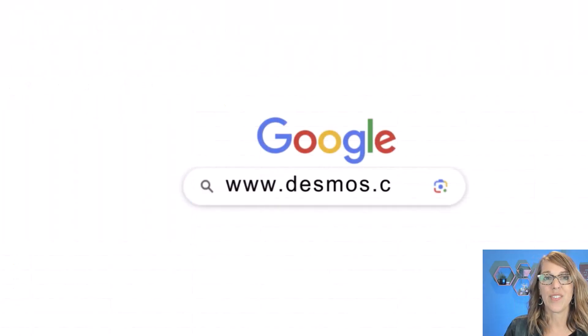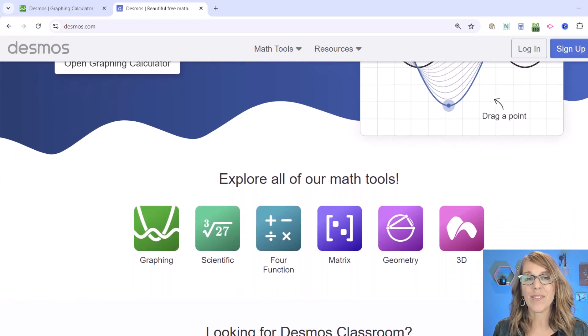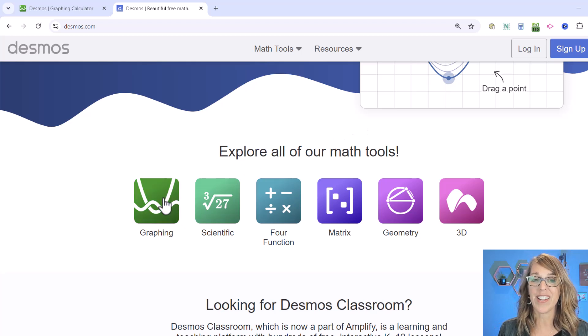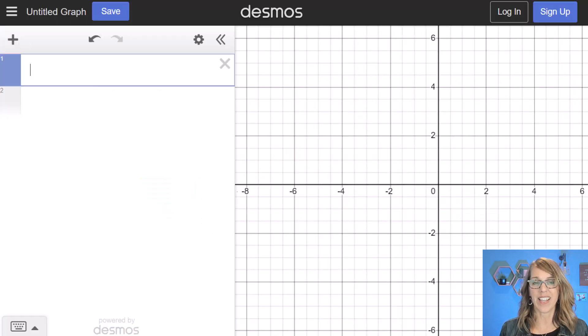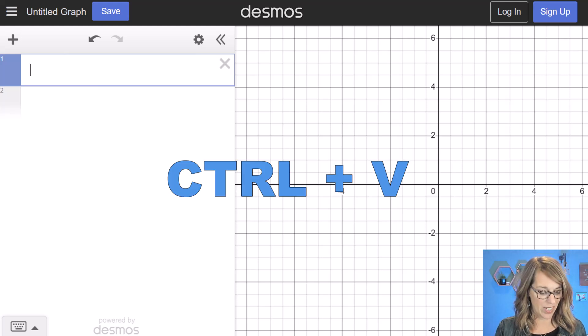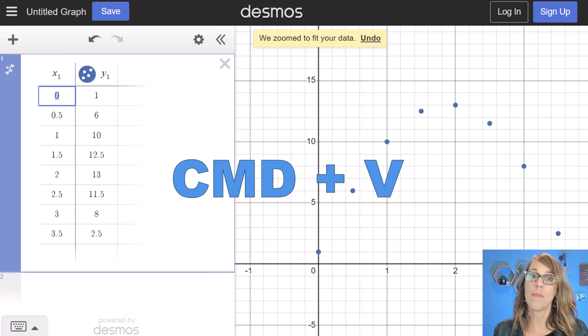Now back over into Desmos. I am here at Desmos.com in their graphing calculator. I want to paste my data in. And I do that by hitting Control V, V as in Victor, so Control V, or Command V if you are on a Mac.